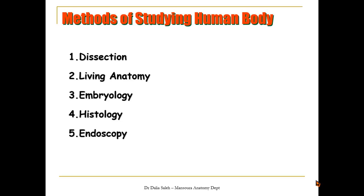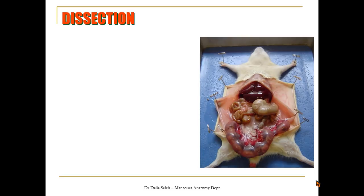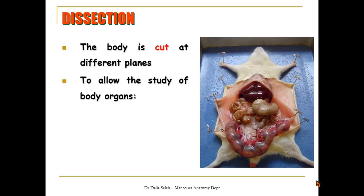The methods of studying the human body include dissection, living anatomy, embryology, histology, endoscopy, and radiology. For dissection, as we can see here in this dissected abdominal area, the body is cut at different planes to allow the study of the body organs regarding their structure, shape, and relations to each other.